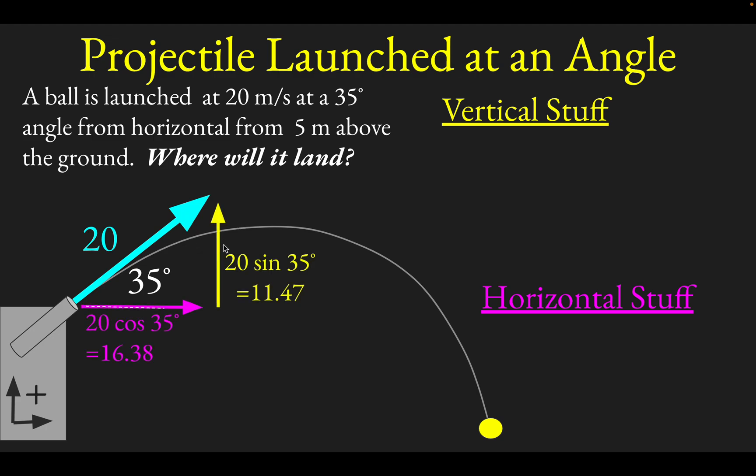To get the vertical component, it's 20 times sine of 35. You could go back to SOHCAHTOA to do that, but if you're going to be a student of physics or an engineer, you're going to want to think of the sine as a function that projects a vector onto the side opposite the known angle. Likewise, cosine takes the shadow of the vector onto the adjacent side, which in this case is the horizontal.